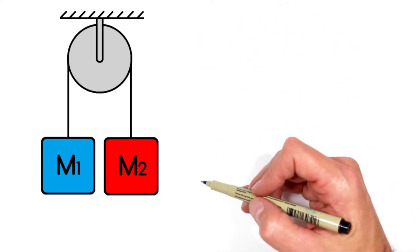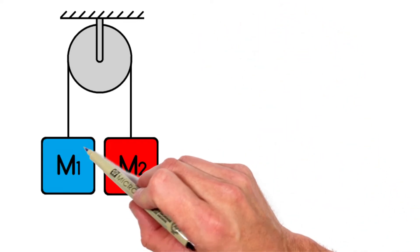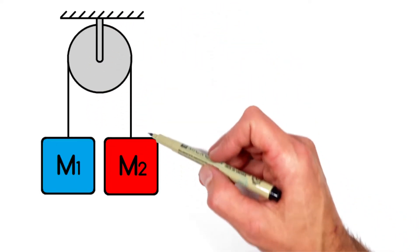Alright, today we're taking a look at an Atwood machine, which is really just two blocks that are hanging from a string which is run up over a pulley.